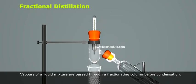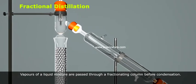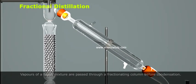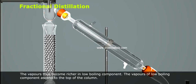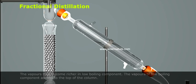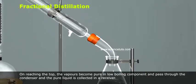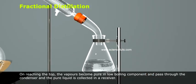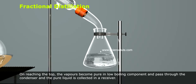Vapors of a liquid mixture are passed through a fractionating column before condensation. The vapors thus become richer in low boiling component. The vapors of low boiling component ascend to the top of the column. On reaching the top, the vapors become pure in low boiling component and pass through the condenser and the pure liquid is collected in a receiver.